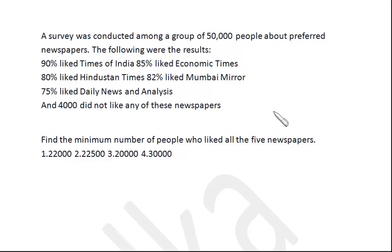We now have 83% as the common figure between Times of India and Economic Times. Now apply the same logic with Hindustan Times at 80%. The calculation should not go beyond 92%, so: 83 plus 80 minus 92. To simplify: 80 minus 92 is minus 12, so 83 minus 12 is 71. Now 71% is the common data among Times of India, Economic Times, and Hindustan Times — meaning 71% of people like all three newspapers.